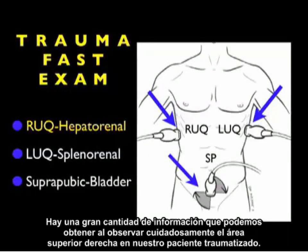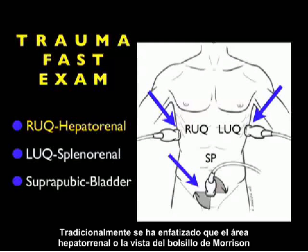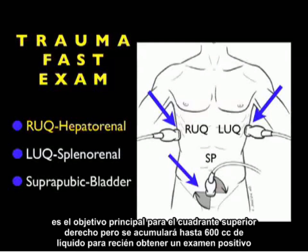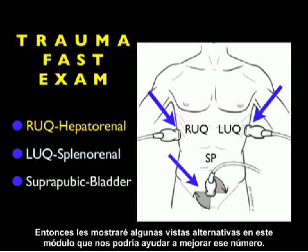There's a tremendous amount of information we can gain by looking closely into the right upper quadrant area in our trauma patient. Traditionally it's been emphasized that the hepatorenal area, or Morrison's pouch view, is the primary target for the right upper quadrant, but it can take up to 600 cc's of fluid to make a positive exam if only looking into that area. I'll show some alternative views in this module that can help us improve on that number.